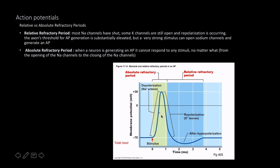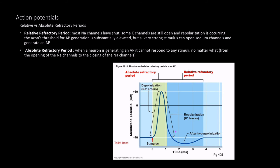Now let's discuss absolute versus relative refractory period. The absolute refractory period is when the neuron is actively generating the action potential — no matter what stimulus you apply, physical or chemical, the neuron will not respond because sodium channels are open and cannot respond. During the relative refractory period, most sodium channels have shut and some potassium channels are still open, so the membrane is in the process of repolarization and becoming more negative. It's much harder to generate an action potential here, but possible with a very strong stimulus.